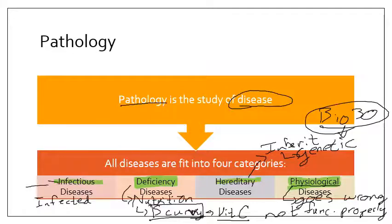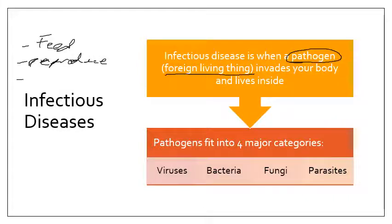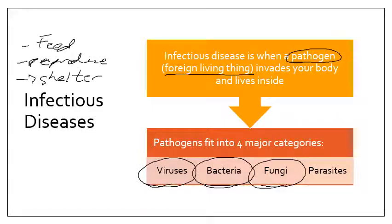What we're going to focus on in this lecture is one specific type of infectious disease. Infectious diseases really fit into four major categories, and what we mean by infectious disease is a pathogen — a foreign living object living inside your body, using it to feed, reproduce, or get shelter. These pathogens come from four different types of organisms: viruses, bacteria, fungi, or parasites. We're going to focus on the virus.